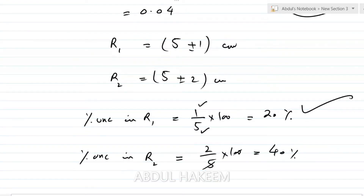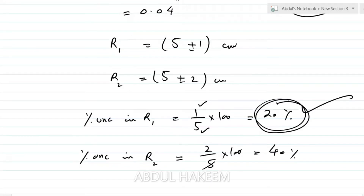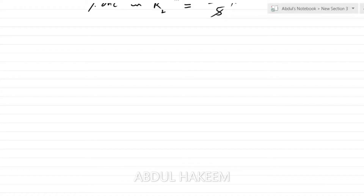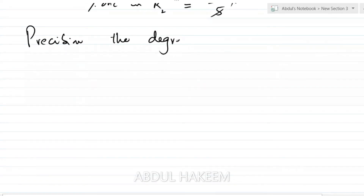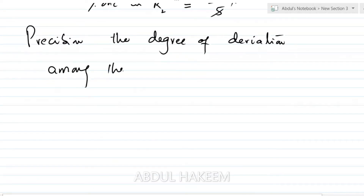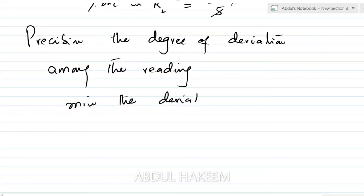R1 will be considered most accurate. Minimum the percentage uncertainty, maximum the accuracy. Precision is the degree of deviation among the readings — minimum the deviation among the readings, maximum the precision.